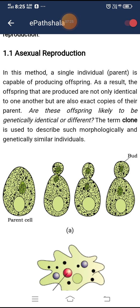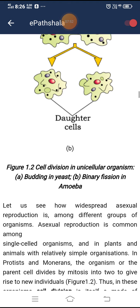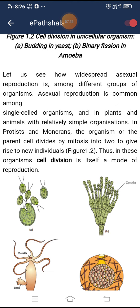In asexual reproduction, a single individual is capable of producing offspring. As a result, the offspring produced are not only identical to one another but are also exact copies of their parent. The term clone is used to describe such morphologically and genetically similar individuals. Asexual reproduction is common among single-celled organisms and in plants and animals with relatively simple organizations. In protists and monerans, the parent cell divides by mitosis into two to give rise to new individuals. Thus, in these organisms, cell division itself is a mode of reproduction.